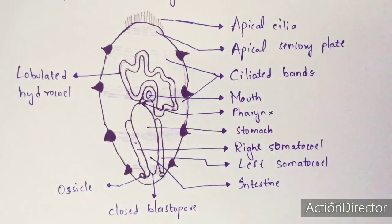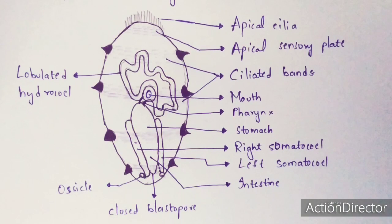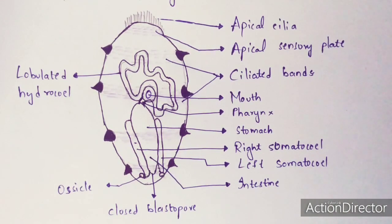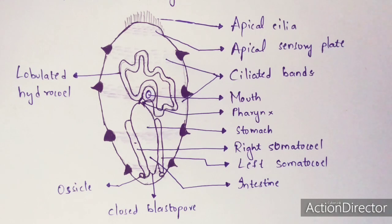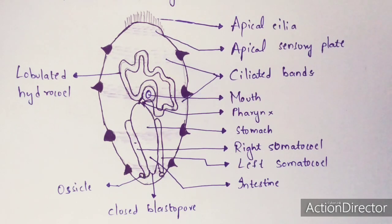These are all the types of larvae of Echinodermata. Hope you liked this video. Diagrams and notes will be given in the WhatsApp group — the link is in the description box. If you like this video, please like and subscribe. If you have any doubts regarding this topic, please comment in the comment box and the doubts will be clarified immediately. Thank you.